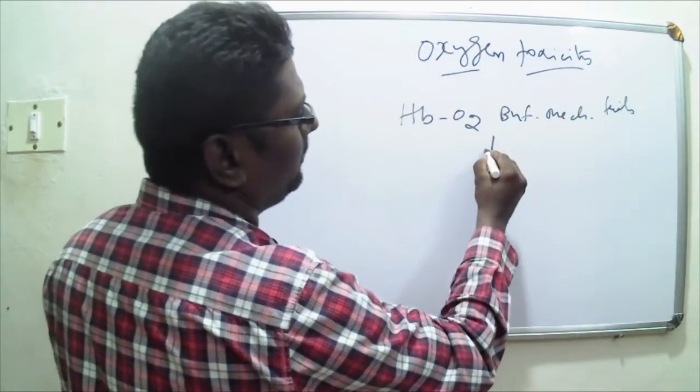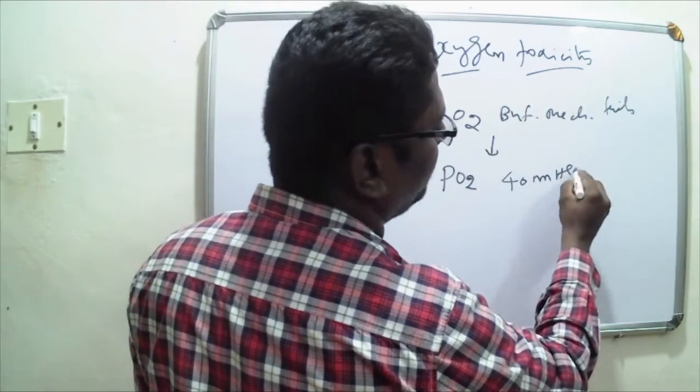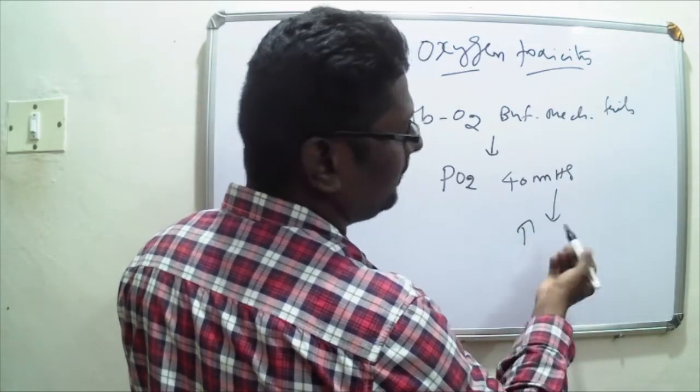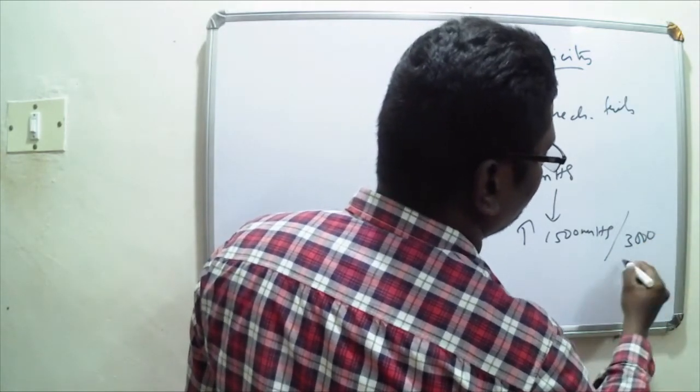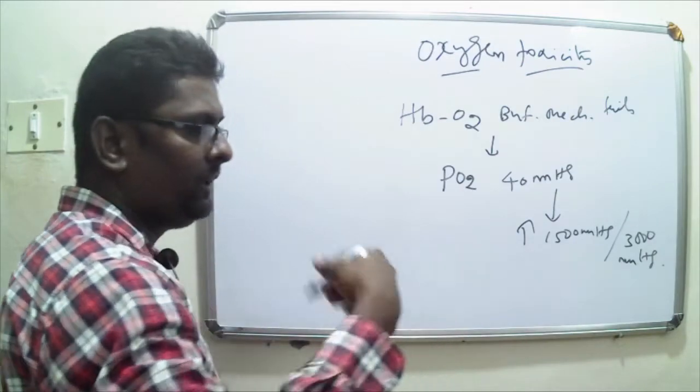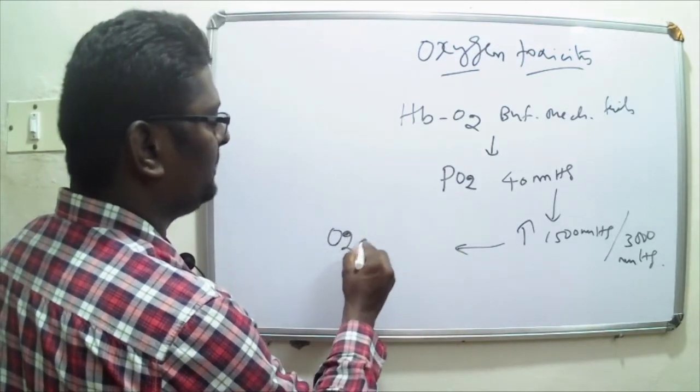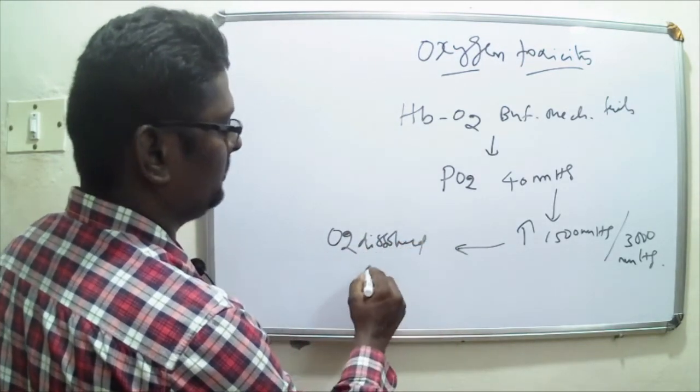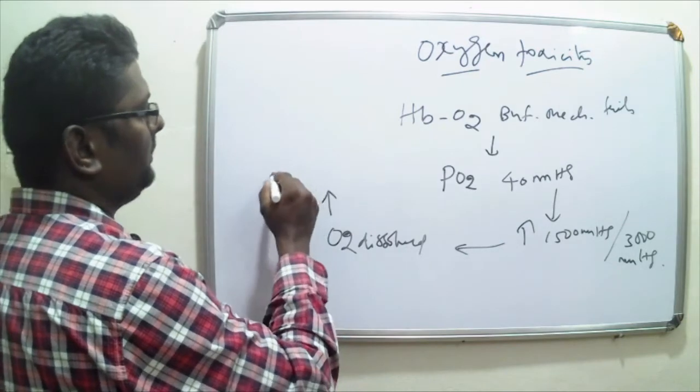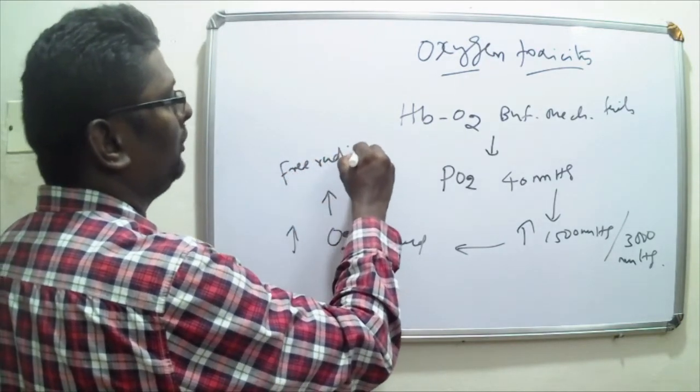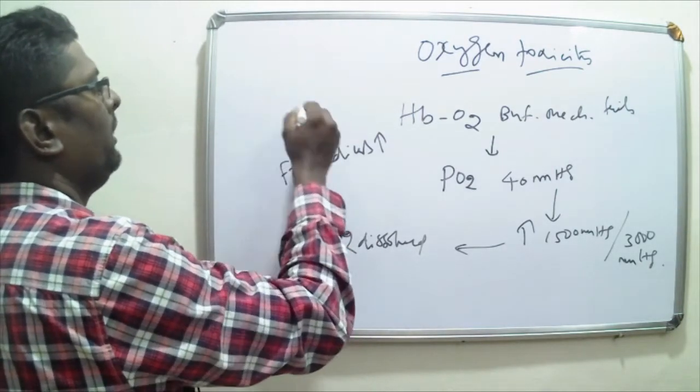So now the tissue partial pressure of oxygen, instead of being maintained at 40 millimeters of mercury, increases to very high levels such as 1500 millimeters of mercury, or in some cases it could increase even to 3000 millimeters of mercury. At this very high partial pressure of oxygen in the tissue level, the amount of dissolved O2 would also increase. Because the dissolved oxygen increases in the body fluids, the amount of free radicals formed would also increase.